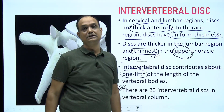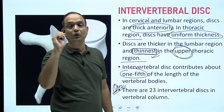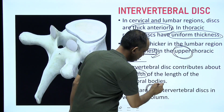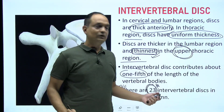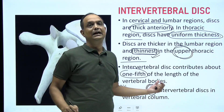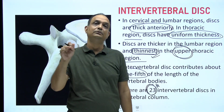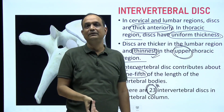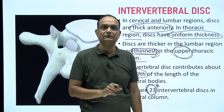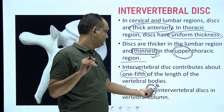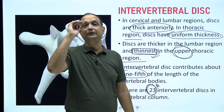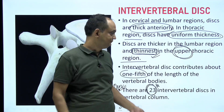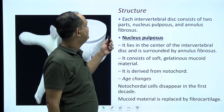There are 23 intervertebral discs in the whole vertebral column. Discs are not present above C2, and they are not present in the sacrum or coccyx. The first disc starts between C2 and C3, and the last disc ends between L5 and the sacrum.